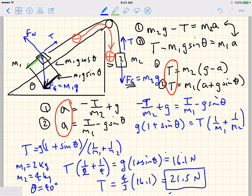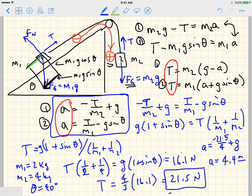And then we can take that tension and put it into either of these equations, either one, you'll get the same answer and you can in fact check this. But when you do that, if we put it in say to the first equation, we would get that the acceleration is minus 21.5 divided by 4 plus g and the acceleration is then 4.4 meters per second squared.